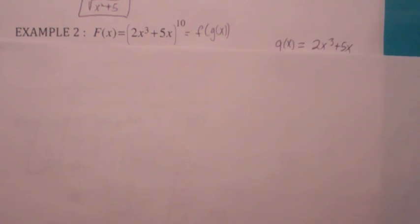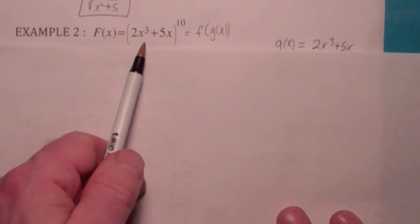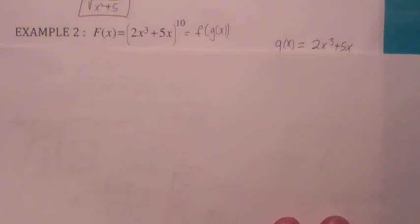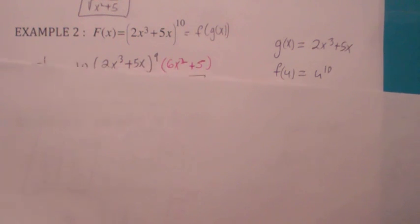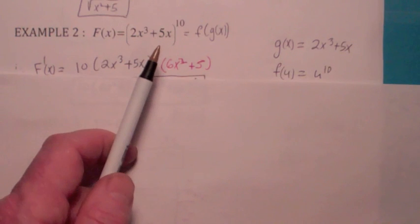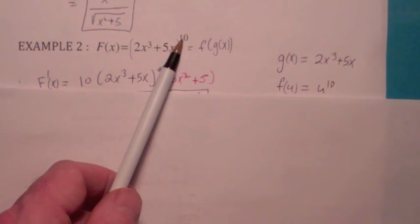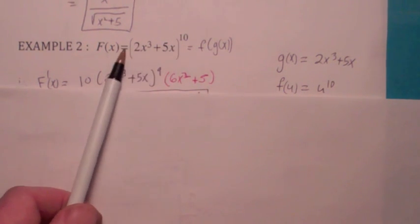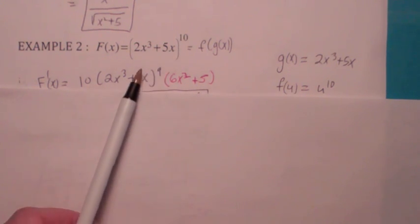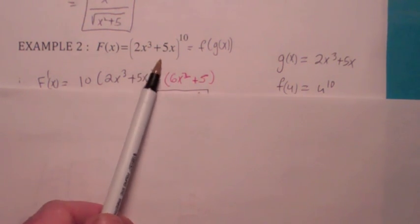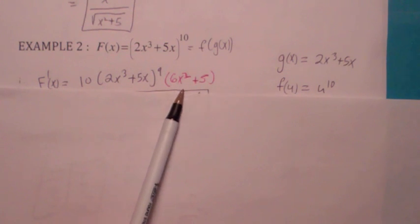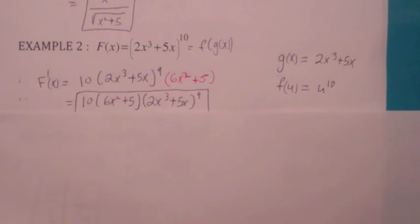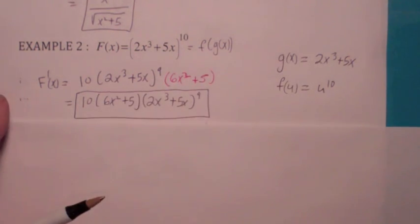Here's another one. The inside function g of x is two x cubed plus five x, and the outside function f of u would be u to the tenth. The chain rule says you start by taking the derivative of the outside function, so it becomes ten — bring down the ten, multiply — so it's ten times g of x to the ninth power. Then you take the derivative of what's inside at the very end, so this becomes six x squared plus five. There's not much simplifying here; you can just leave it like that.